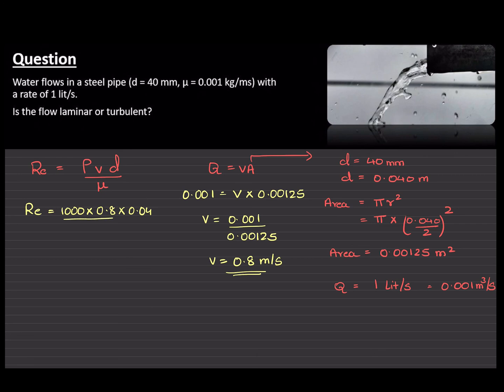The entire thing divided by the dynamic viscosity or just viscosity that's given to us over there, 0.001. Putting this into your calculator and working out the answer will give us the Reynolds number to be 32,000. Now, obviously, 32,000 is way more higher than 4,000.